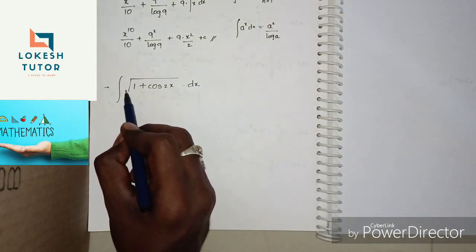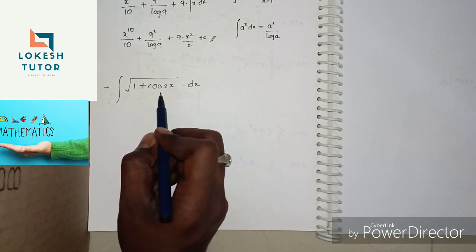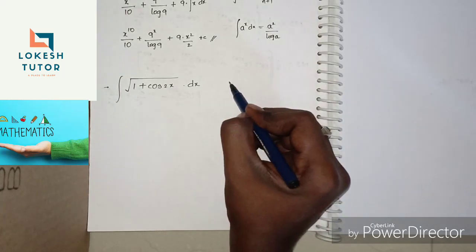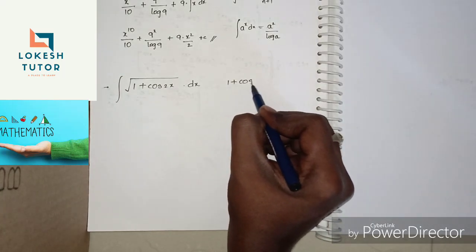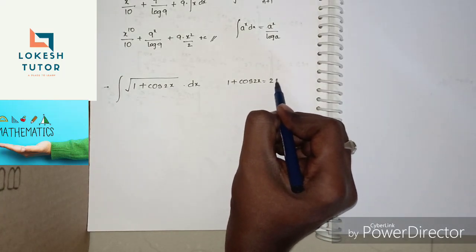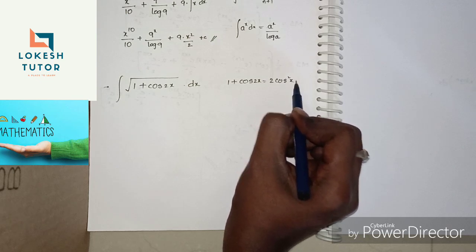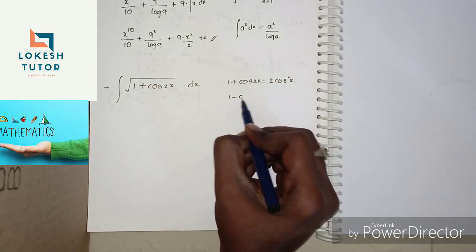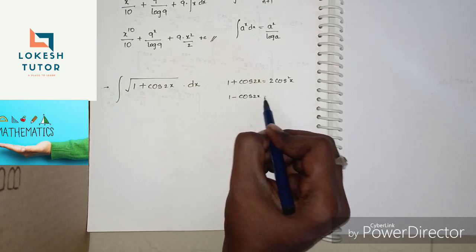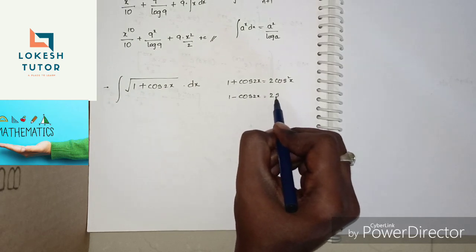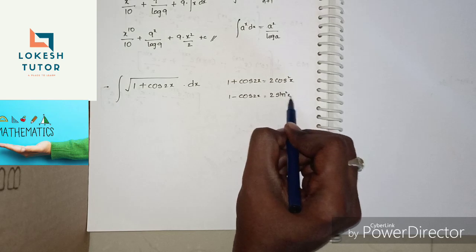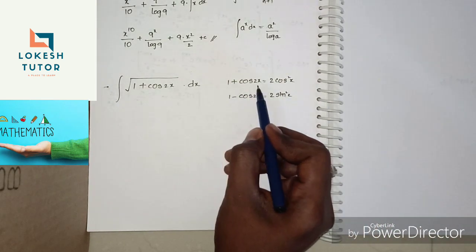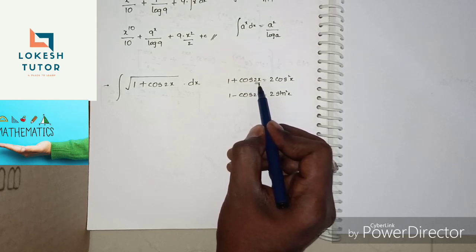Next problem: Integral of √(1 + cos 2x). The key identity here is: 1 + cos 2x = 2cos²x. Similarly, 1 − cos 2x = 2sin²x. These are very important trigonometric identities.